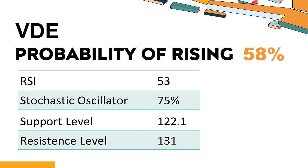What technical factors should you consider when analyzing VDE? The 14-day Relative Strength Index (RSI) value of VDE was 53. When the RSI is between 50 and 70, it generally indicates that the stock is moderately bullish. This means that the security's price has been rising but has not yet reached overbought levels, which are usually considered an RSI reading of 75 or higher.